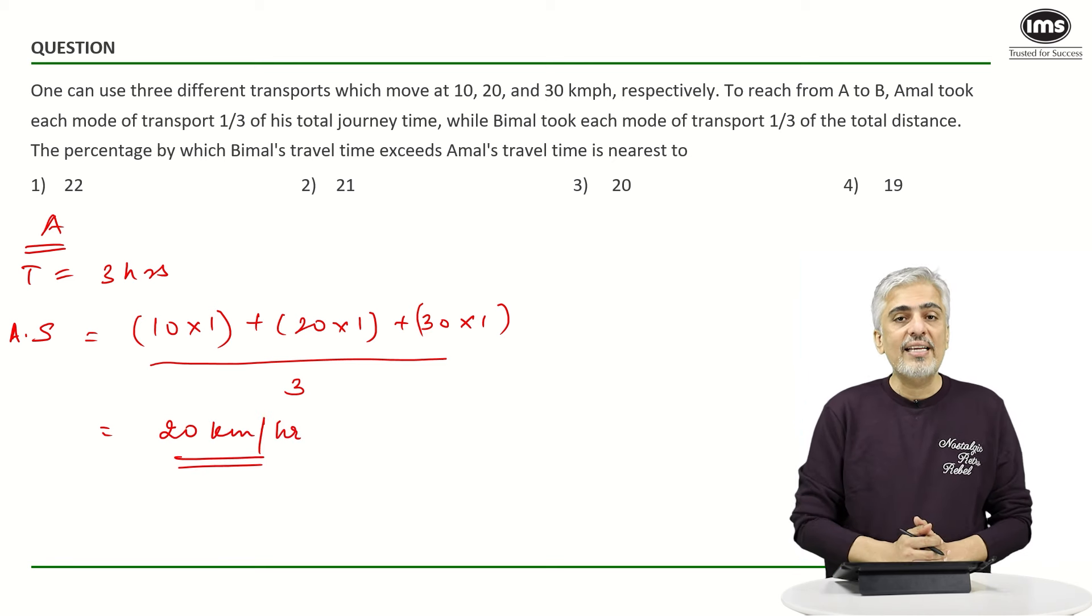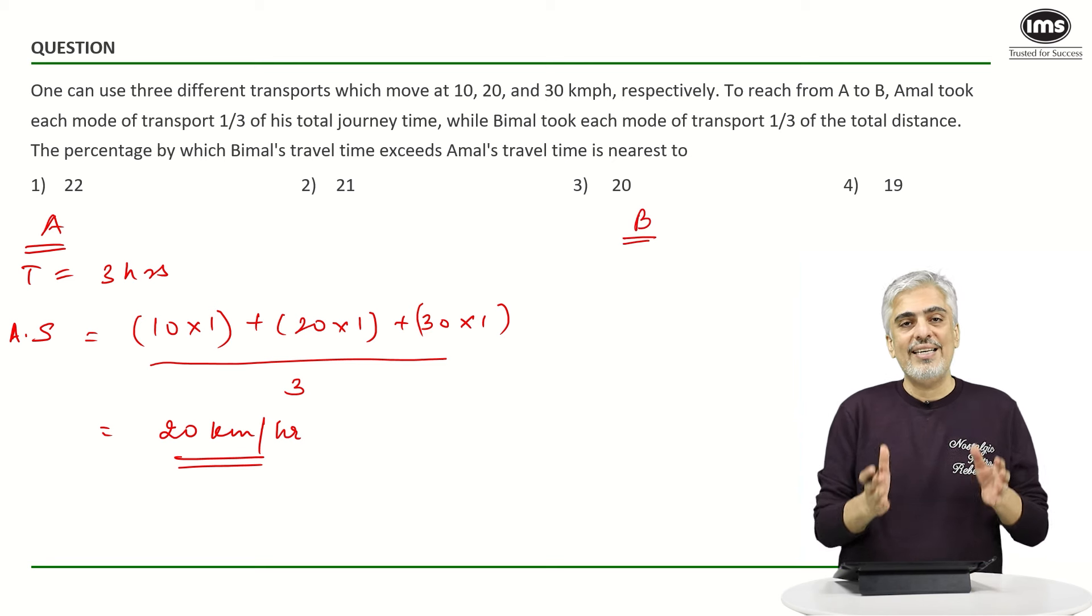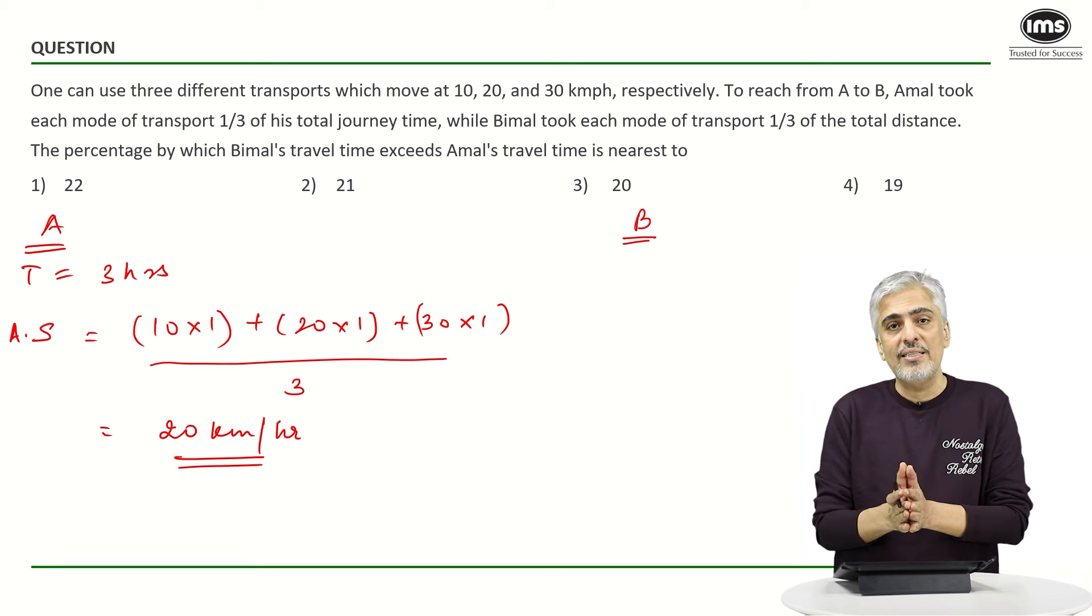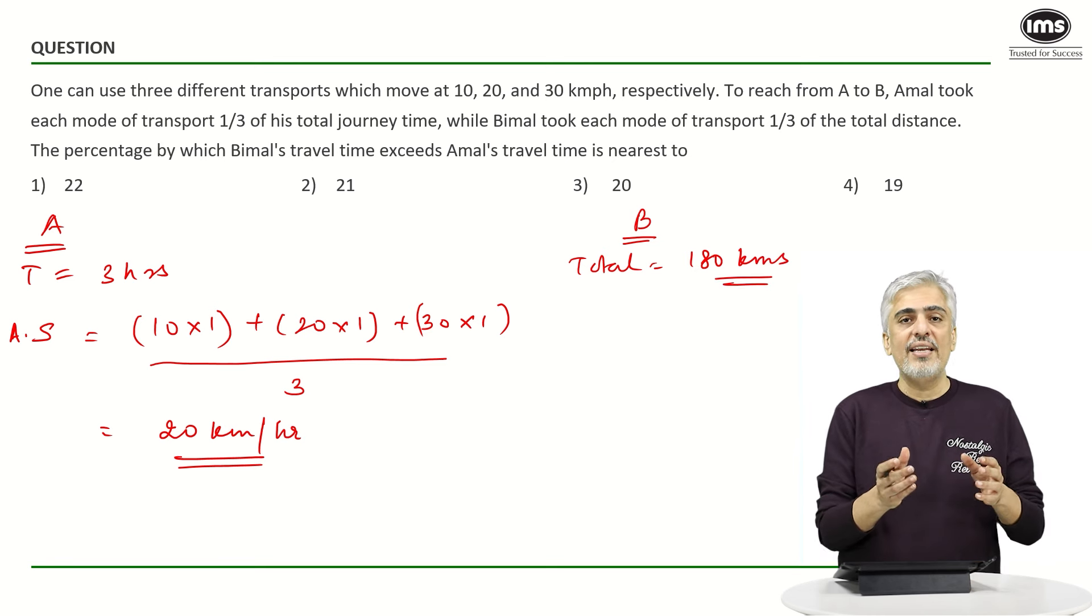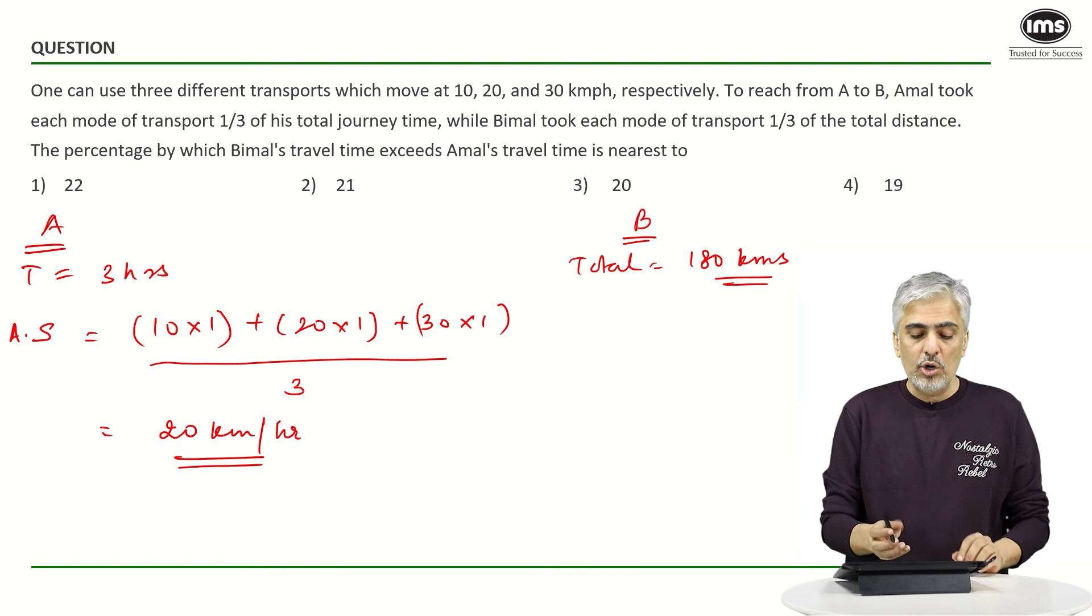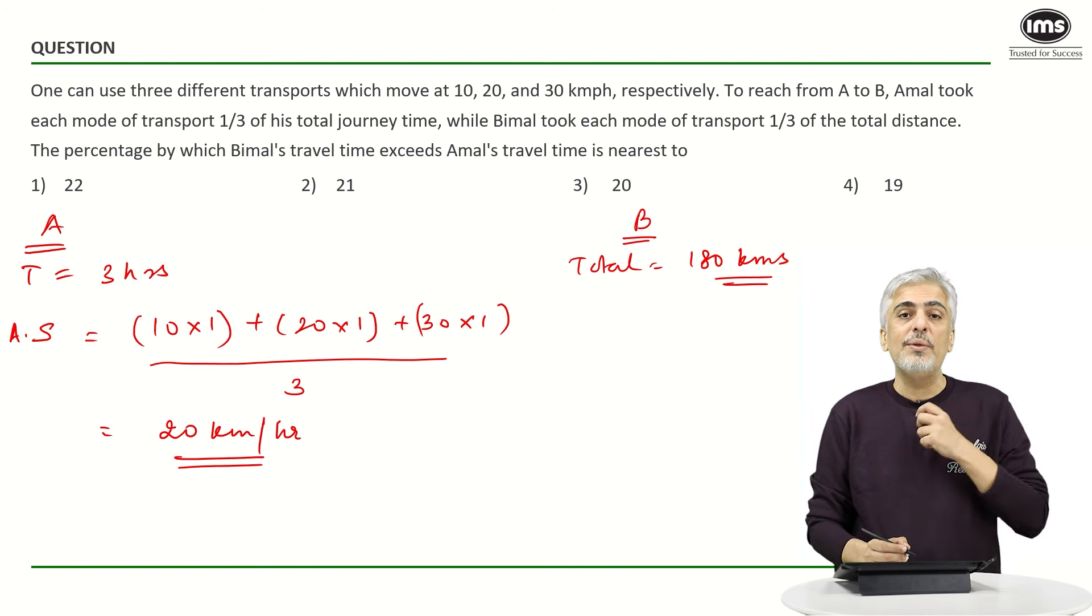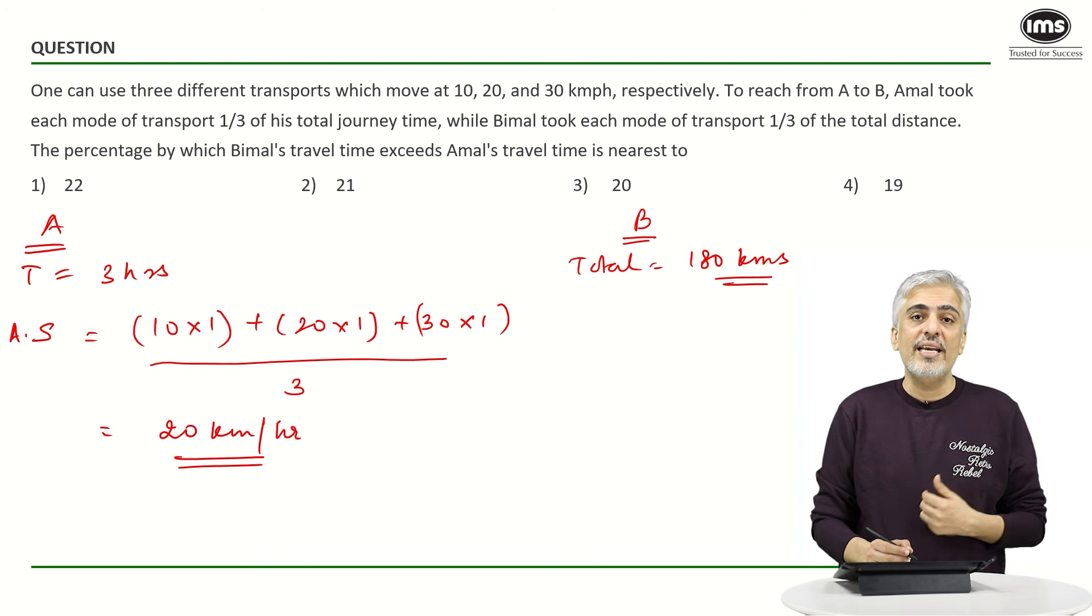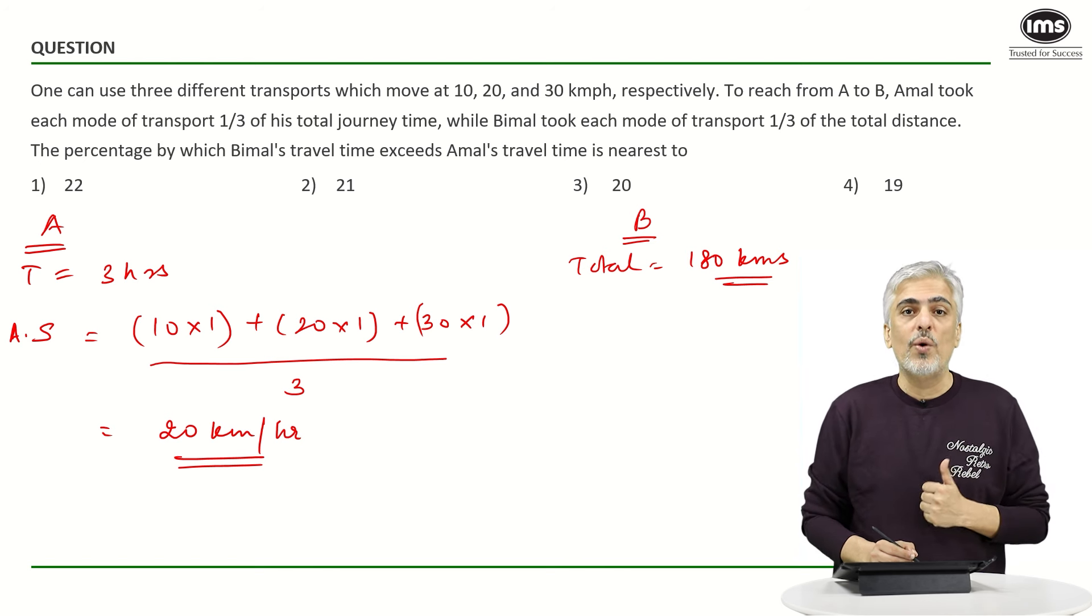Let's do the exact same thing for Bimal now. While in case of Bimal what happens? He has broken up his distance into three parts. Let's take the total distance of his journey as 180 kilometers. That means again I hope you realize why I have taken 180 and why not any other number because I want the numbers to be divisible by 10, 20 and 30 and I want each part to be divisible by 10, 20, 30. So the LCM of 10, 20 and 30 is 60 and I made it into 3 so 180.